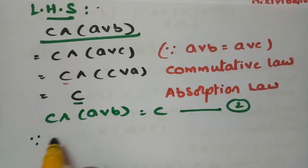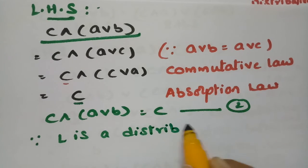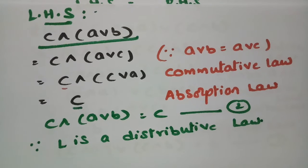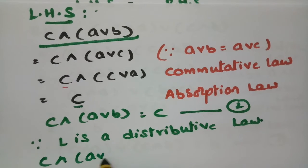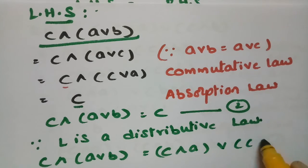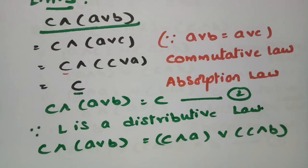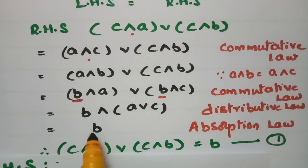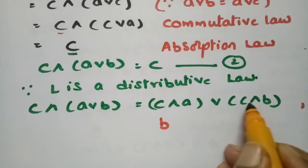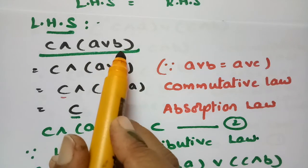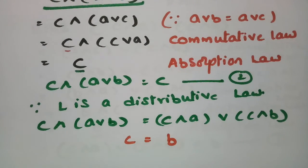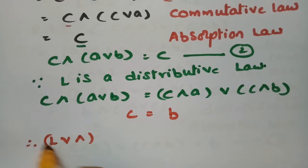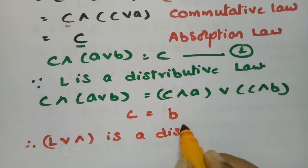Since L is a distributive lattice, by the distributive law we have c∧(a∨b) = (c∧a)∨(c∧b). From the RHS calculation this equals b, and from the LHS calculation this equals c. Therefore b = c.